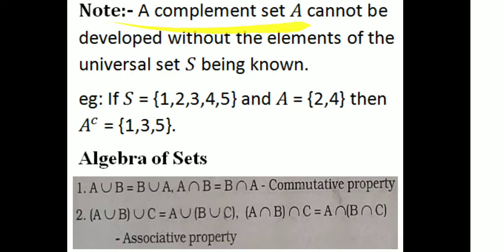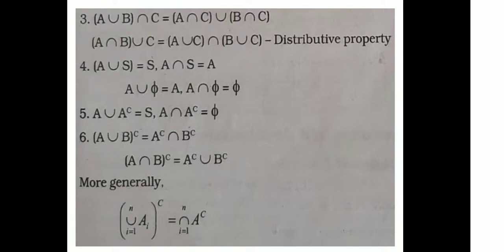Note that a complementary set A cannot be determined without knowing the elements of the universal set S. If S equals {1, 2, 3, 4, 5} and A equals {2, 4}, then the complementary set equals {1, 3, 5}. For the algebra of sets: A union B equals B union A, and A intersection B equals B intersection A — the commutative property holds for set operations union and intersection.